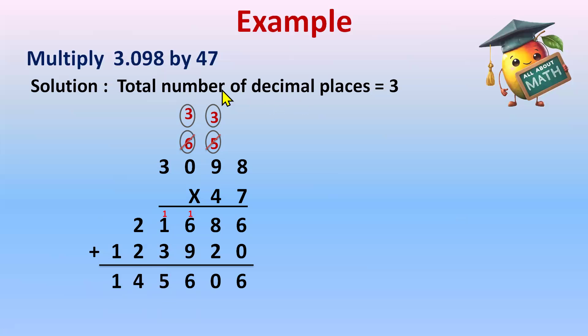Now in answer, we will write the decimal. So total number of decimal places are 3. So decimal will come after 3 digits. It starts from here and moves till here. So it will be here. So answer will be 145.606. So this is your answer.